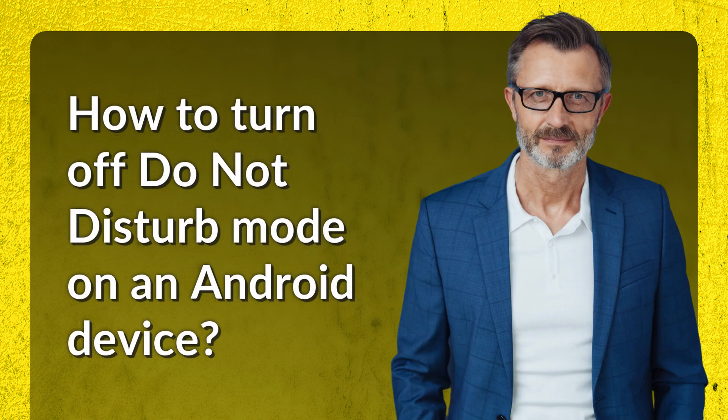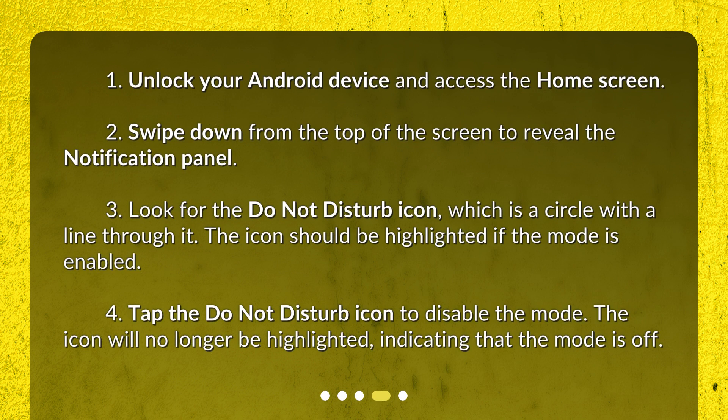How to turn off Do Not Disturb mode on an Android device? Step 1: Unlock your Android device and access the home screen. Step 2: Swipe down from the top of the screen to reveal the notification panel.